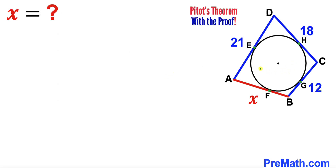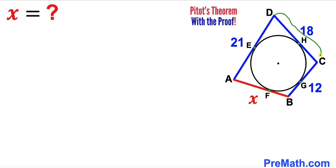Welcome to PreMath. In this video we have a quadrilateral ABCD that is fully circumscribing a circle, such that points E, F, G, and H are the points of tangency. Side AD is 21 units, side CD is 18 units, side BC is 12 units, and side AB is represented by X. Our task is to find the value of X — in other words, to calculate the side length AB.